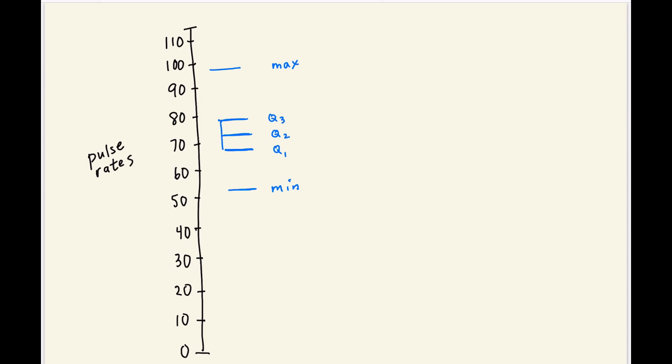And I just connect these to make a box. And then I make these whiskers that connect the box to the min and the max. And this is just a very basic box plot. It's just a little more visual. And you can see that it divides the pulses. We have 25% of the pulses here, 25% here, 25% here, and 25% here. And I can see the min and the max, and I can see the median also. So this is what we call a box plot.